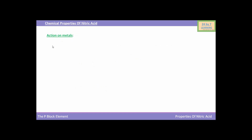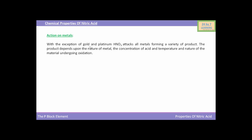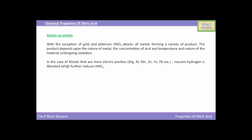Now we will see the action of nitric acid on metals. With the exception of gold and platinum, HNO3 attacks all metals forming a variety of products. The product depends on the nature of the metal, the concentration of the acid, the temperature, and the nature of the material undergoing oxidation. In the case of more electropositive metals like magnesium, aluminium, manganese, zinc, iron, and lead, nascent hydrogen is liberated which further reduces HNO3.